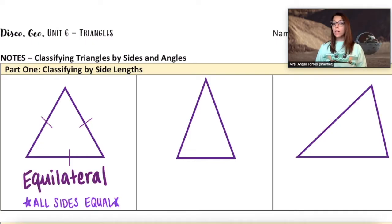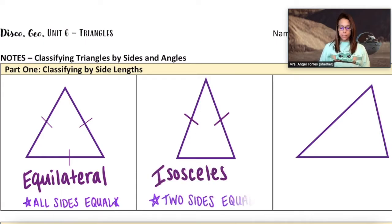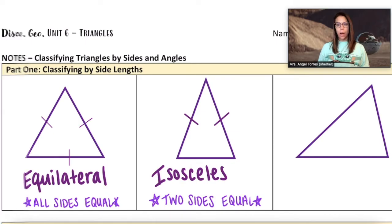The second way we can classify a triangle is if two of its side lengths are equal to each other. We call that an isosceles triangle, meaning only two sides of the three are congruent. Finally is our third type of triangle in which no sides are equal or congruent to each other and that is called a scalene triangle.